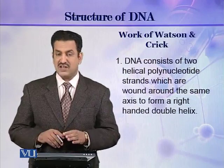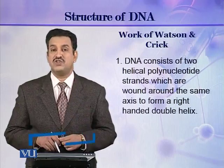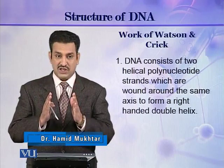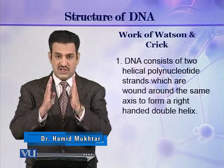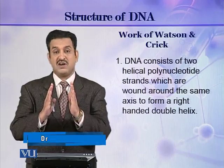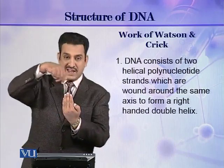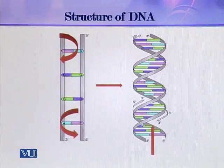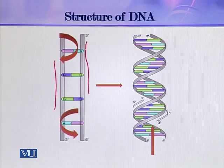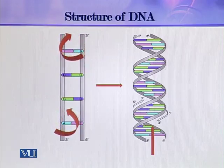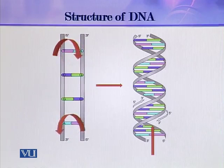They described that DNA consists of two helical polynucleotide chains. These two polynucleotide chains are joined with each other and then coiled helically around an axis. As you can see in this picture, the two strands are joined together and wound around the axis, forming a double helical structure. This is the double structure of the DNA molecule.